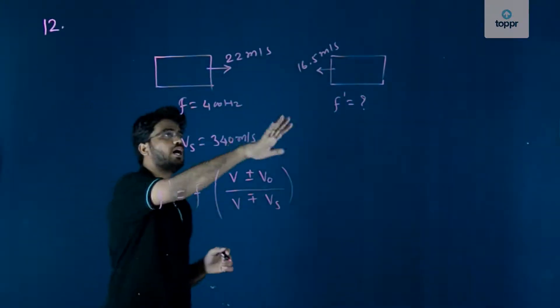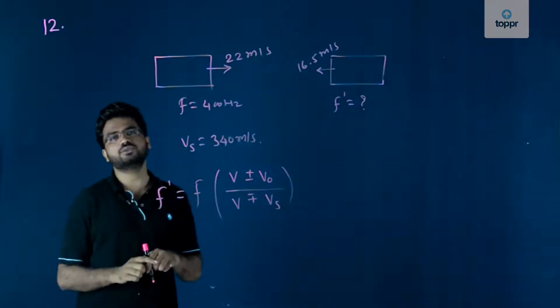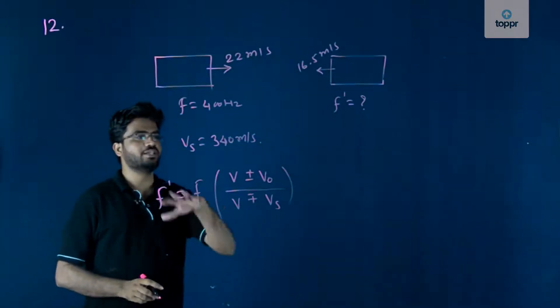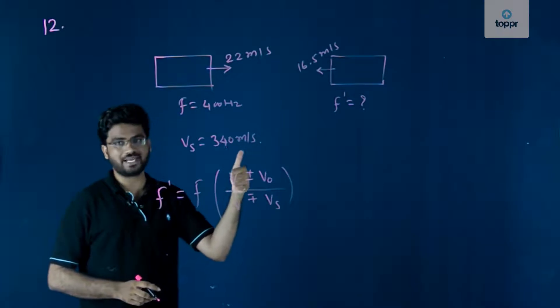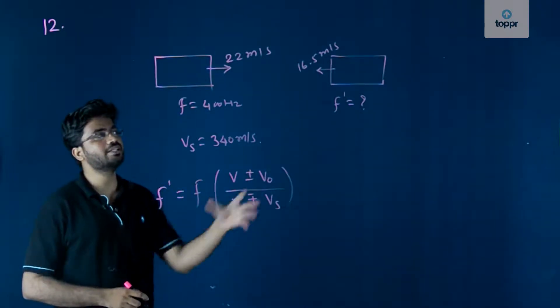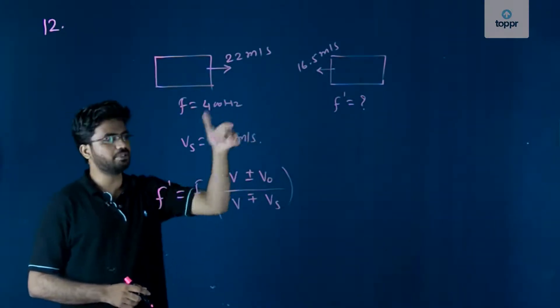So, as these two are moving towards each other, by using the formula for towards, for towards thumbs up, right, for towards we use upper sign, right, upper sign.